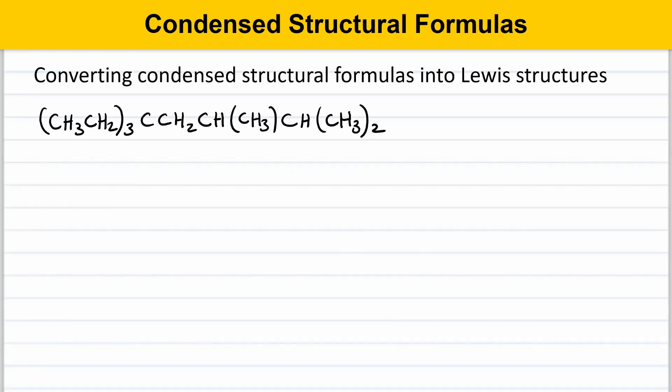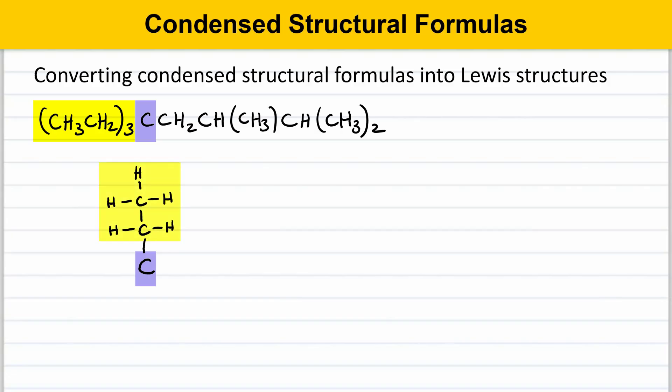On this slide, we're going to talk about how to take a condensed structural formula and convert it into a Lewis structure — this is also a very important skill. Here's an example of a condensed structural formula that students have had problems with in the past. We're going to go through this step by step. The first thing to notice is that this molecule starts with CH3CH2 in parentheses with a subscript 3, meaning there are three of these groups attached to a central carbon atom. We're going to start with the central carbon atom and draw that in first, then draw the various groups attached — the three CH3 groups.